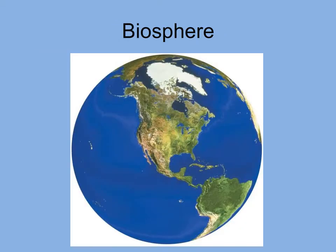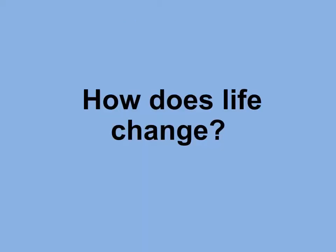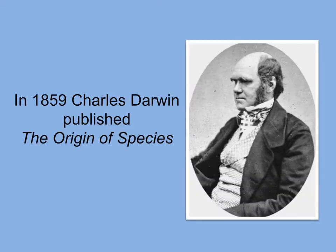All living things on the planet make up the biosphere. The theory of evolution explains how populations, over time, have adapted to their changing environment. Although many scientists and non-scientists proposed that life was not static throughout the years, it wasn't until the 19th century that Charles Darwin proposed a mechanism to scientifically explain how evolution could occur.